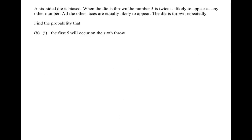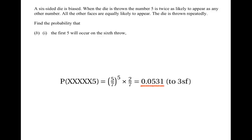The probability of getting the first five on the sixth throw is the probability of getting five non-fives followed by a five. That's (5/7) to the power of 5 — the probability of five non-fives in a row — times 2/7, the probability the last throw is a five. This probability equals 0.0531 to three significant figures.